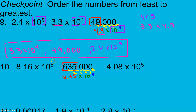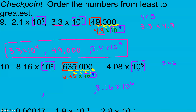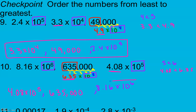Now I compare my exponential parts — my times 10 to the powers. 5 is less than 6, so my times 10 to the 5th are smaller than my times 10 to the 6th, which means 8.16 times 10 to the 6th is going to be biggest. Then comparing my decimal parts, 4.08 is less than 6.35, which means 4.08 times 10 to the 5th is smallest, and 635,000 is in the middle. And there they are from least to greatest.